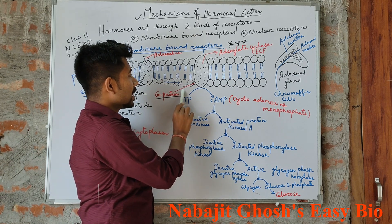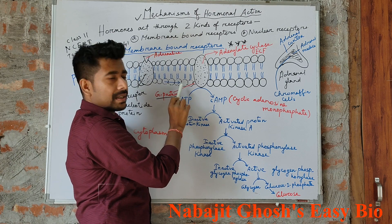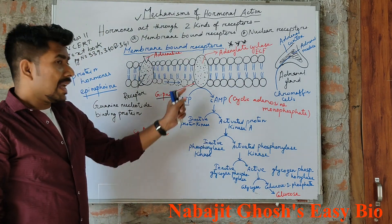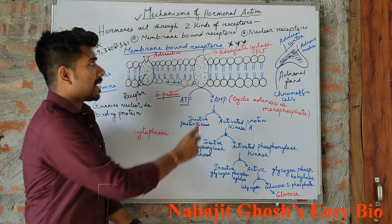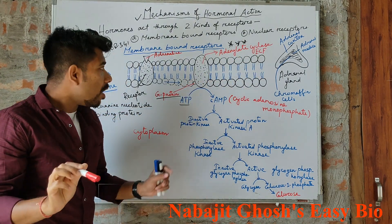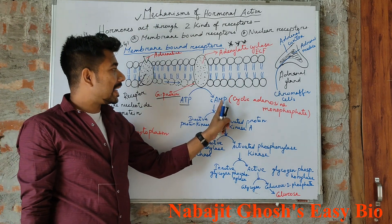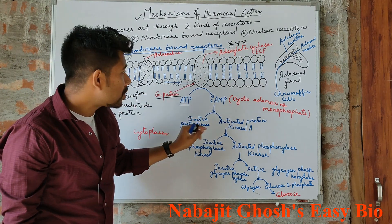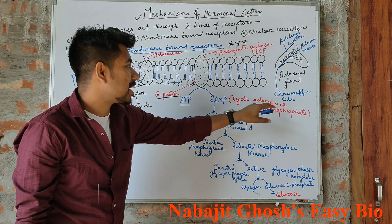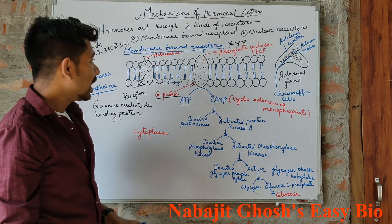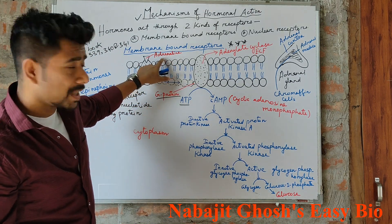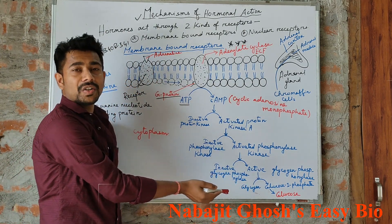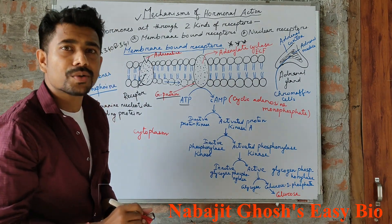When G protein is activated, then the G protein further activates adenylyl cyclase enzyme. A single molecule of active adenylyl cyclase enzyme can produce about 100 cyclic adenosine monophosphate molecules. And a single molecule of adrenaline hormone can produce about 100 million molecules of glucose within 1 to 2 minutes.